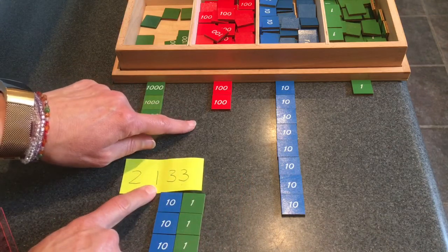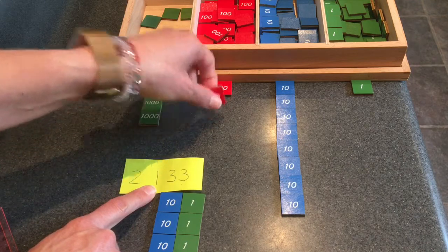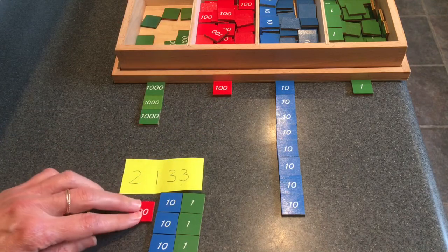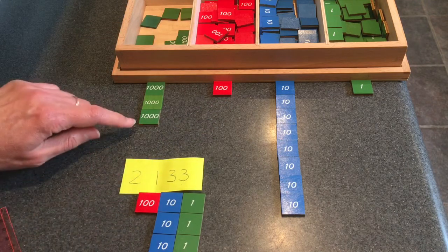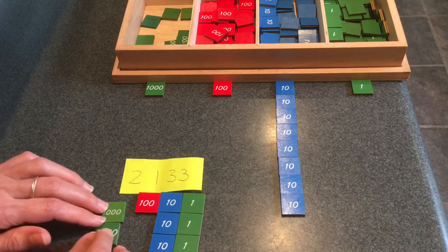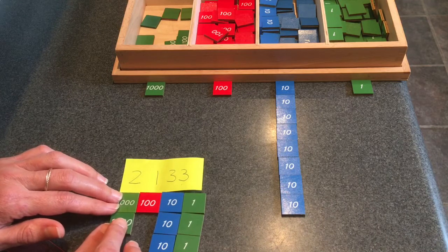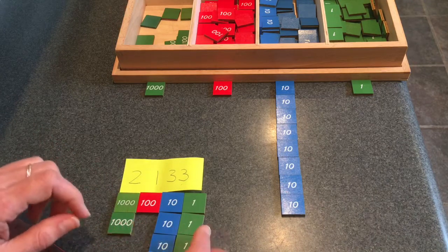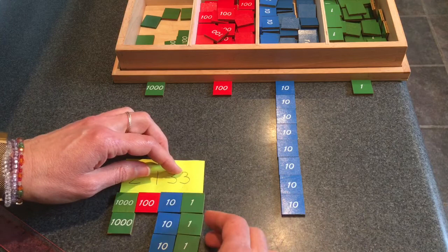How many hundreds do I need to take away? That's right, one hundred. And I need to take away, that's right, two thousands. Did you take away two thousands too? So we took away two thousand, one hundred, three tens, and three units.